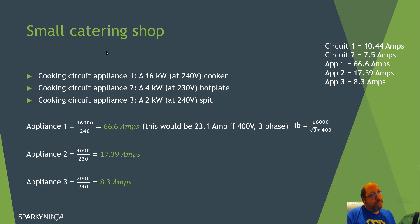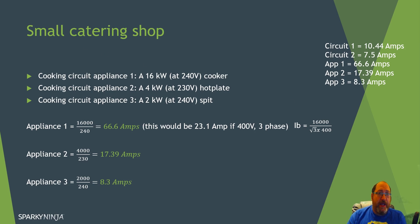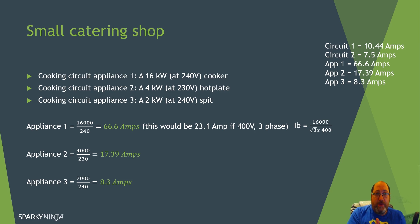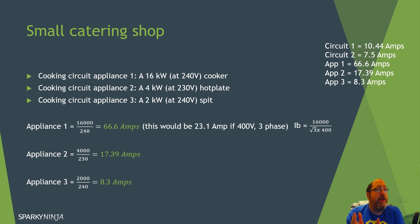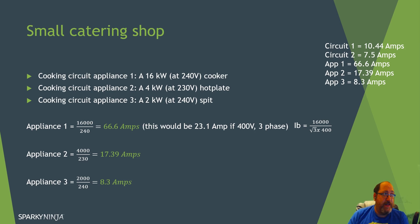Now for cooking. We're not going to apply the household approach because this is a catering shop — cooking equipment is installed for purpose. We can diversify the circuits, but we don't diversify the final circuit itself. If a piece of equipment needs a certain power, a circuit is installed to supply that full power. What we may do for the distribution board feeding those circuits is assume they may not all be used at the same time. But first, we work out the full power demand of each cooking appliance.